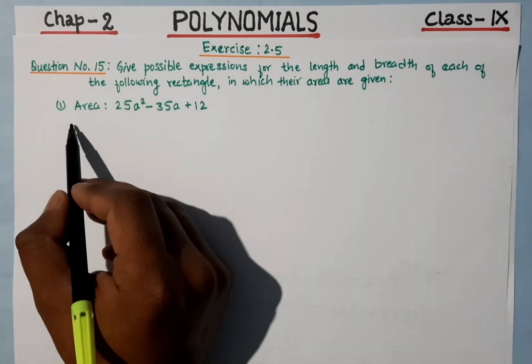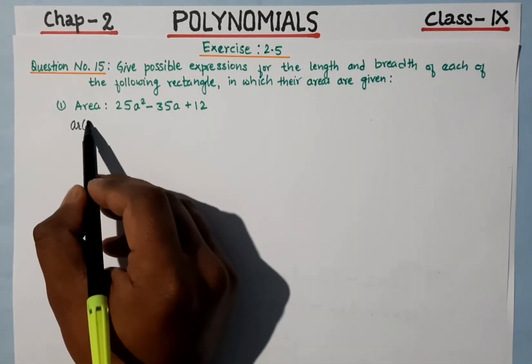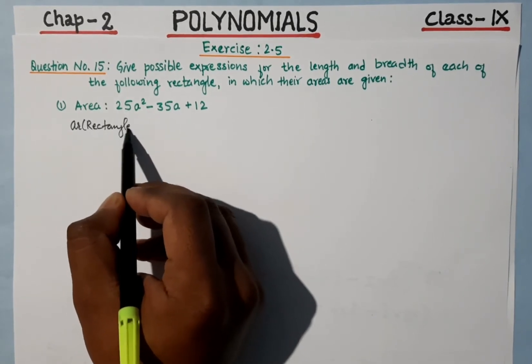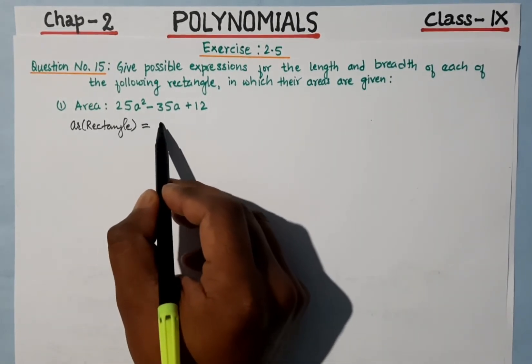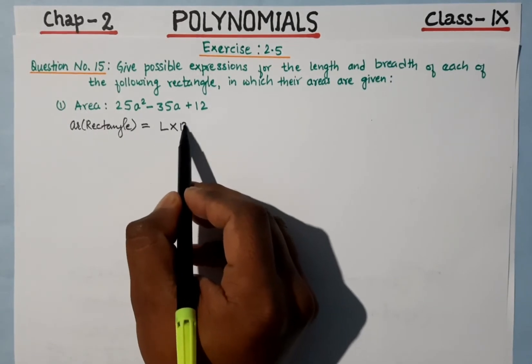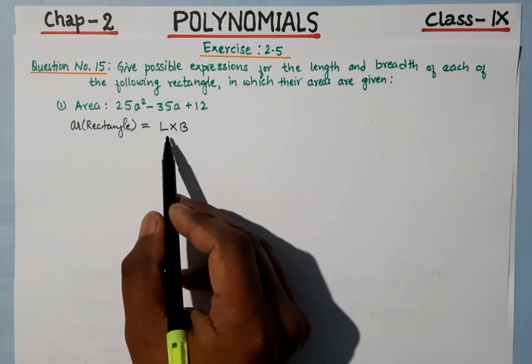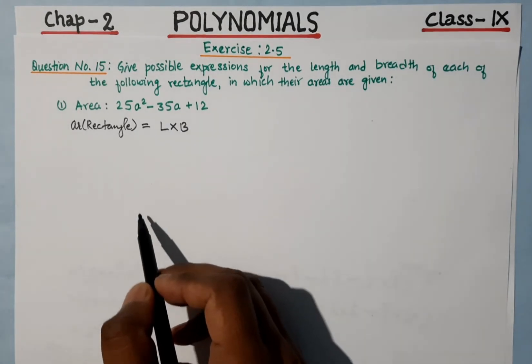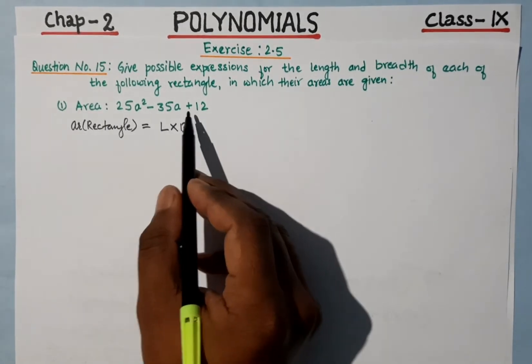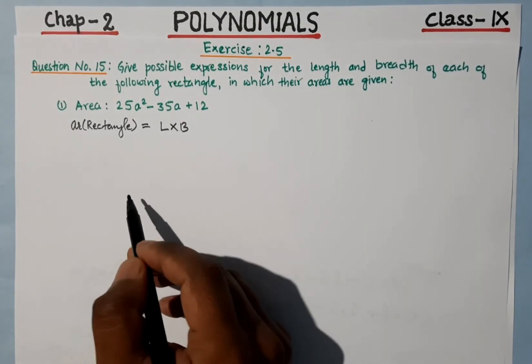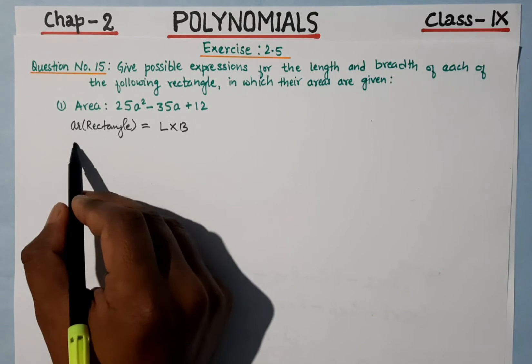The area of a rectangle is equal to length into breadth. So what we need to do is factorize to find out length and breadth. The area is already given, so here we need to factorize to get length and breadth.